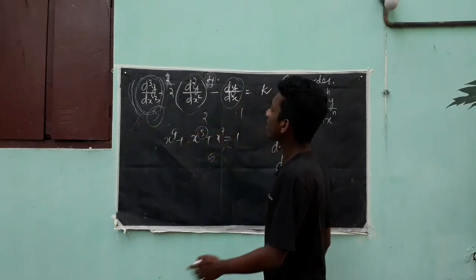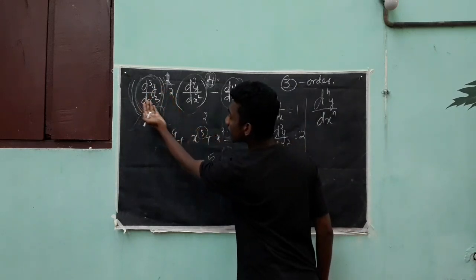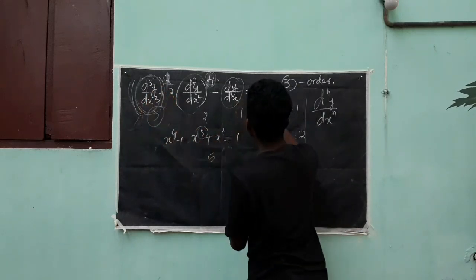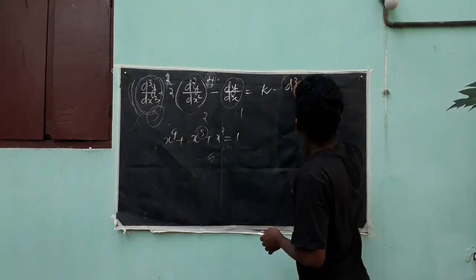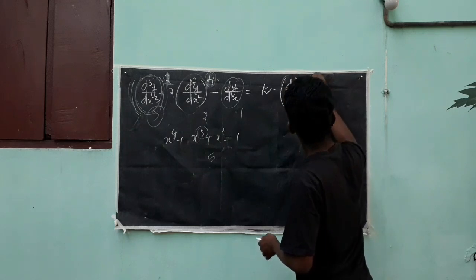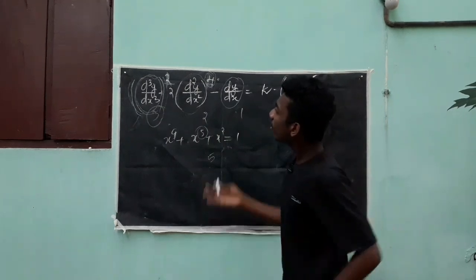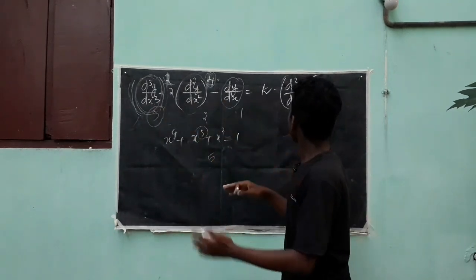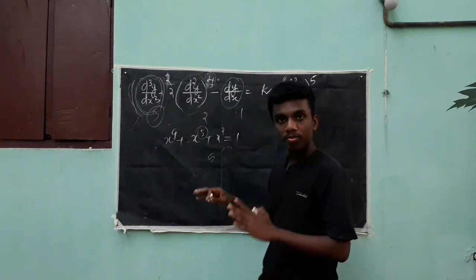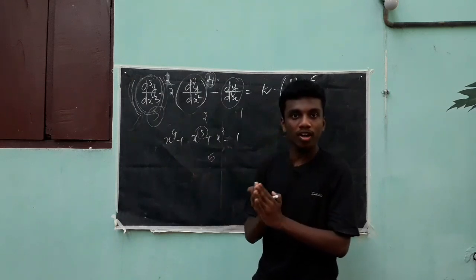Here is another example. We have d³y/dx³ in one term, and also -(d³y/dx³)⁵ in another term. Both are third order terms. The powers are 1 and 5 respectively. Since both have the same highest order (3), we look at the highest power among those terms.